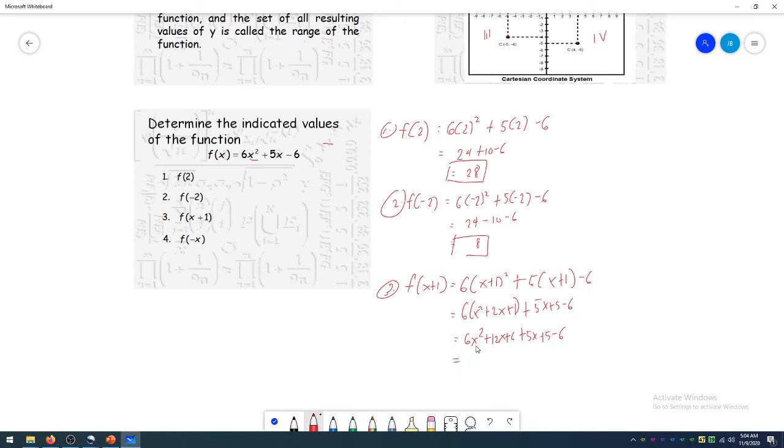Then after that, combine like terms. Therefore, that's 6x². For x, we have 12x and 5x, so that's plus 17x. Then we have the constants, which is 6 plus 5, so 11 minus 6. That is 11 minus 6 is positive 5. Now this is your final answer.